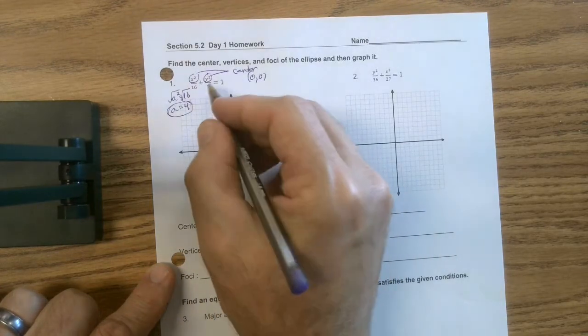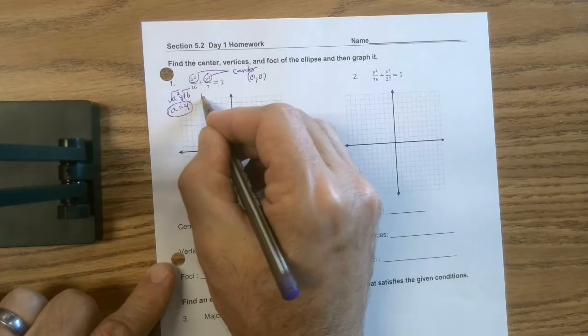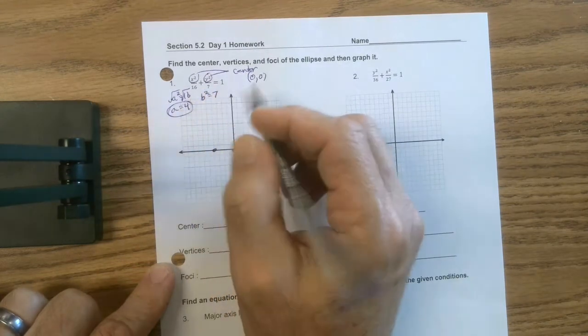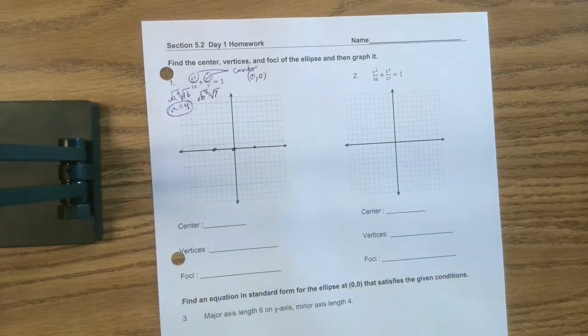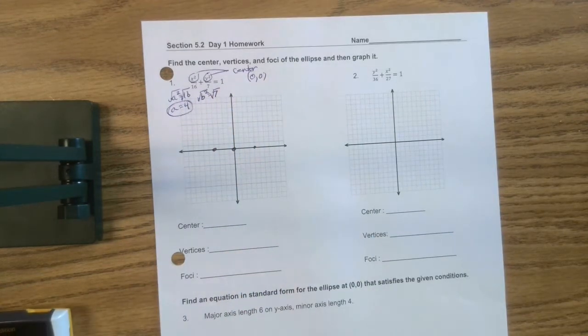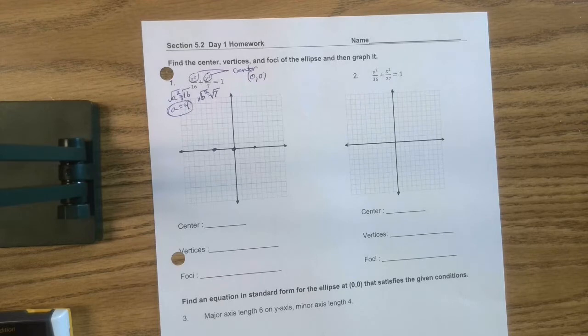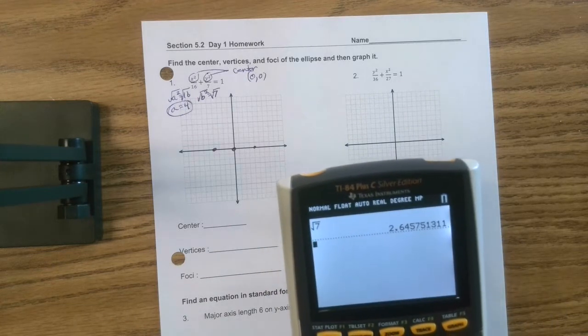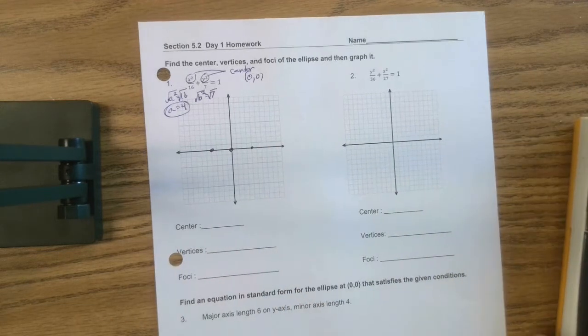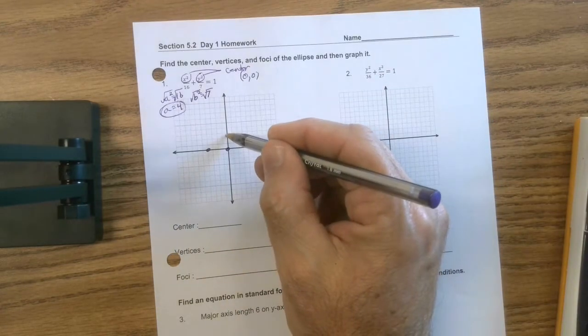Then it gets a little weird. That 7 makes things a little miserable. But, oh well, deal with it. Take the square root. Now I could, well, let's go ahead and do it. Let's just take the old calculator. And let's take the square root of 7. Second square root of 7, and then enter 2.6. Okay, found that on the old calculator there.